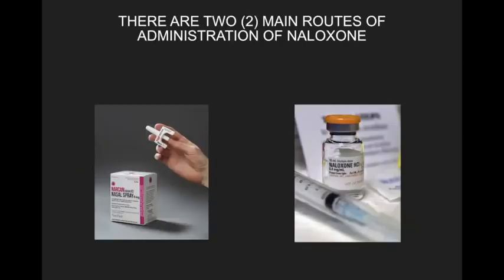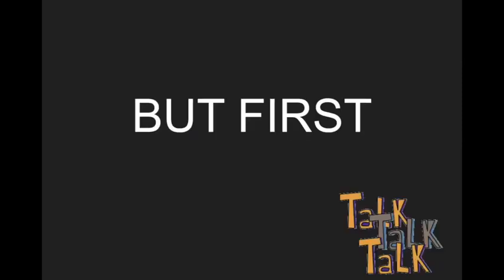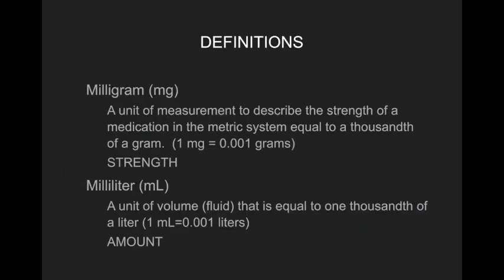There are two ways to administer naloxone: intranasal and intramuscular. Key definitions: a milligram is a unit of measurement for drug strength, equal to one thousandth of a gram. A milliliter equals 0.001 liters — milliliter is the fluid, and milligram is the medication itself. For dosage calculation using a pediatric patient of 10 kilograms (purple on the weight chart), you calculate 0.1 mg/kg times 10 kg, which equals 1 milligram.